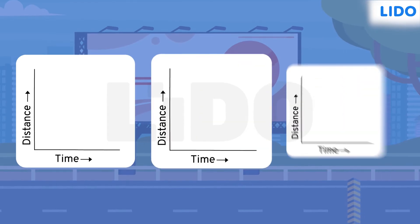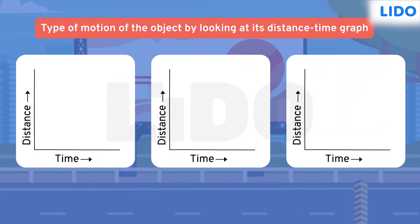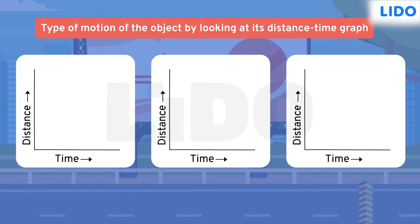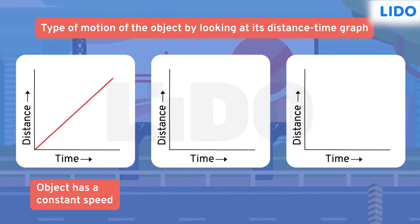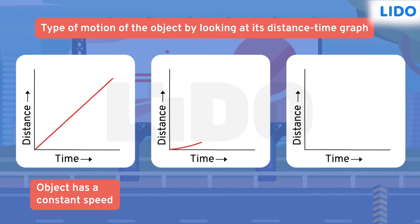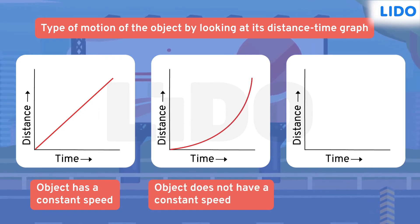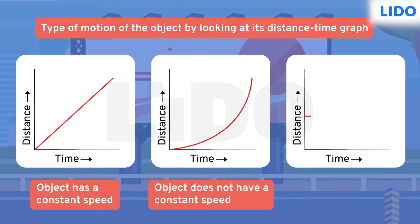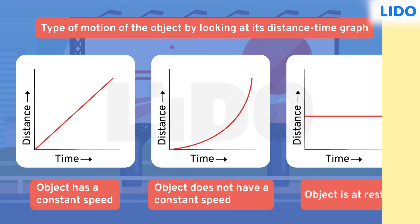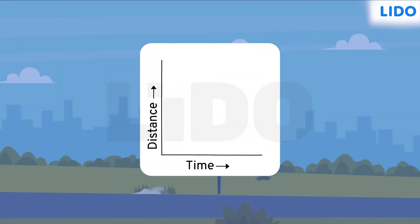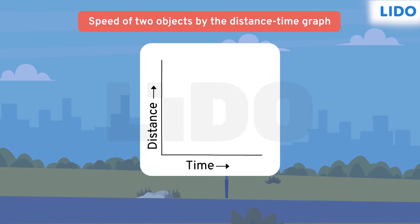We can easily identify the type of motion of an object by looking at its distance-time graph. A straight line means an object has a constant speed. A curved line means an object does not have constant speed. A horizontal line means an object is at rest. We can also compare the speed of two objects using a distance-time graph.